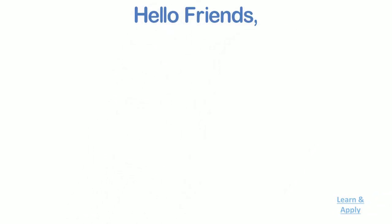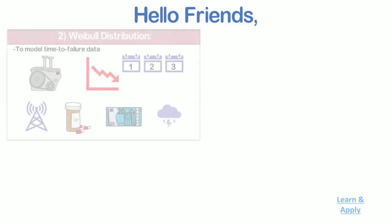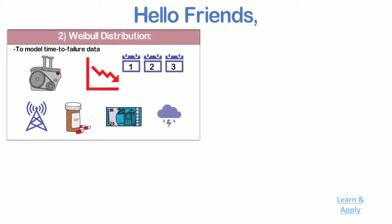Hello friends, in the last video we had seen two data distributions for continuous variables: exponential distribution and Weibull distribution.